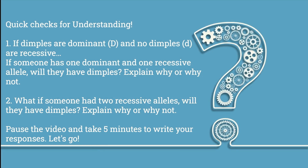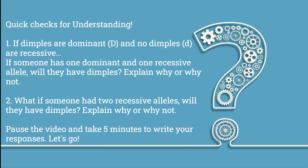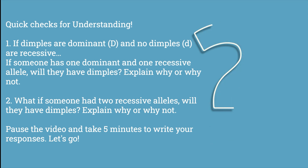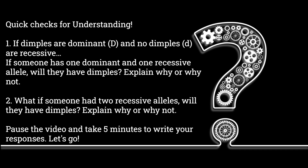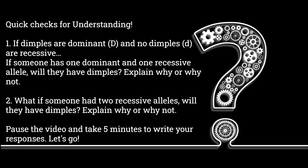Quick checks for understanding. Number 1: If dimples are dominant, capital D, and no dimples are recessive, lowercase d, and someone has one dominant and one recessive allele, will they have dimples? Explain why or why not. Number 2: What if someone had two recessive alleles — will they have dimples? Explain why or why not. Pause the video and take 5 minutes to write your responses.